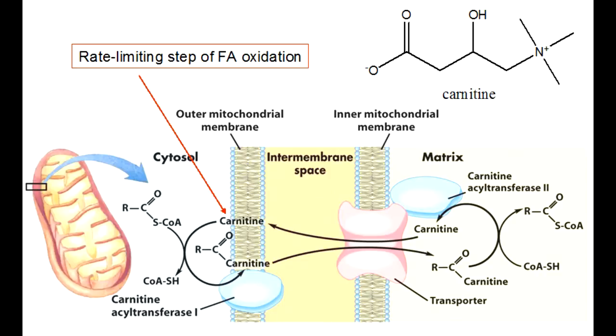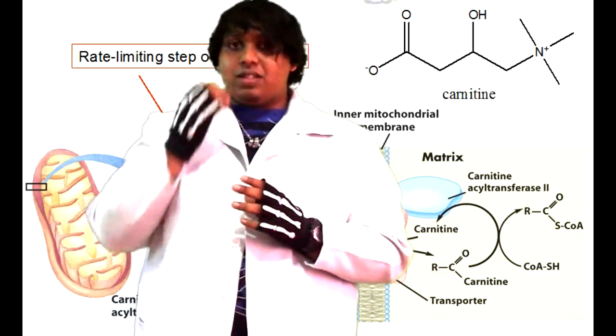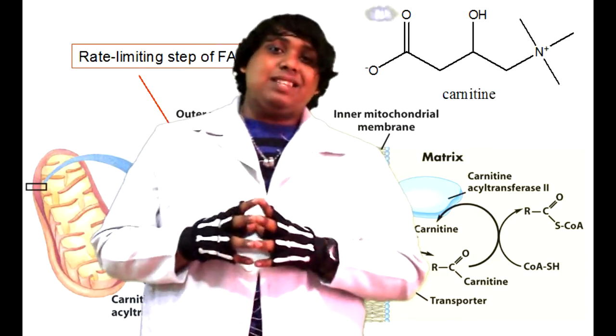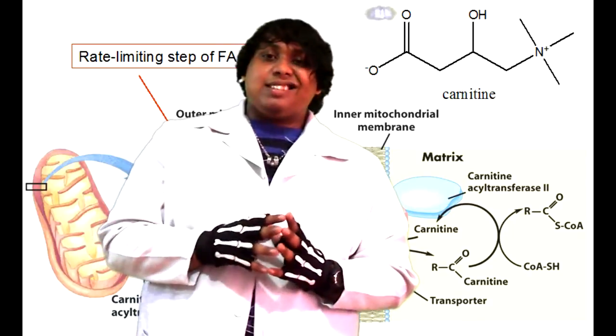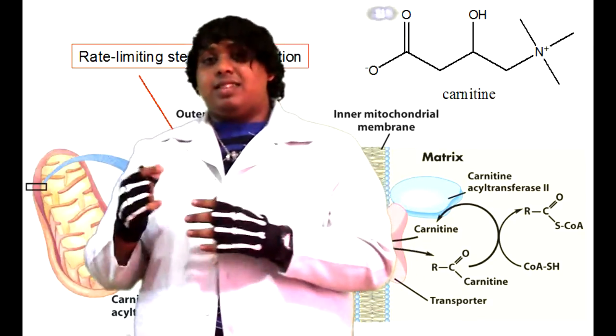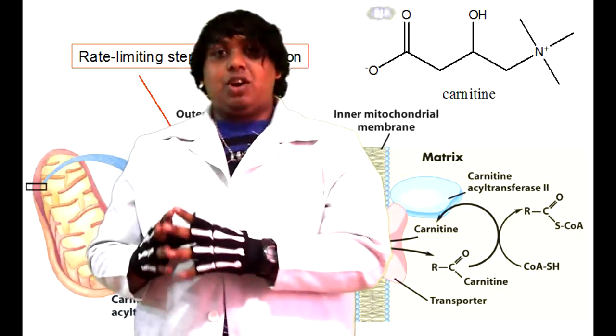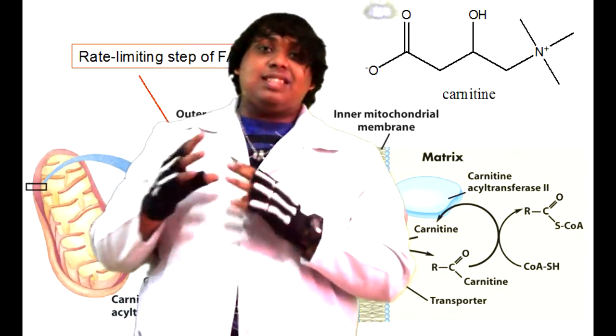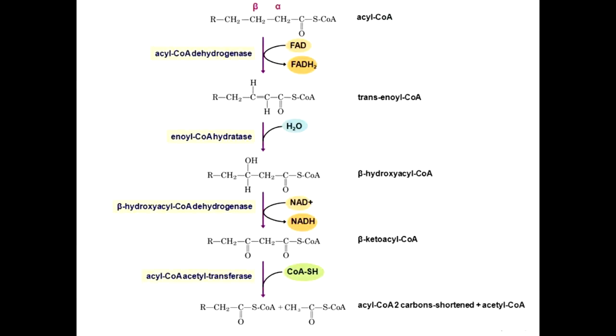So now via CPT1 and the carnitine shuttle, you now have your long chain fatty acid carnitine derivative inside of the mitochondrial matrix, and now you need to get it back in the form of a fatty acyl-CoA derivative so that you can process it via beta oxidation. Here is where you use the second part of the carnitine shuttle enzymes, and that is called CPT2. What CPT2 does is pretty much the reverse of CPT1 - it replaces the carnitine group with a CoA group. So now you have a fatty acyl-CoA within the mitochondrial matrix, and so now you can start the real mechanics of beta oxidation and start to break it down.